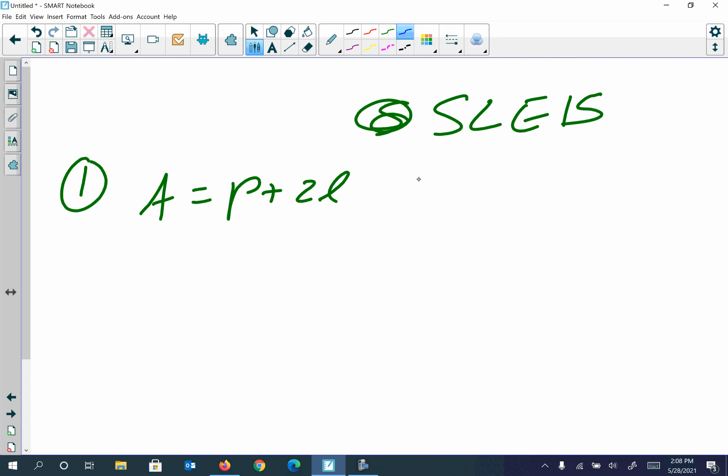They want us to get P by itself. So 2 times L wants to move over, so I'm going to subtract 2L from both sides, and we get A minus 2L, because we can't combine letters, is equal to P, and we're done.